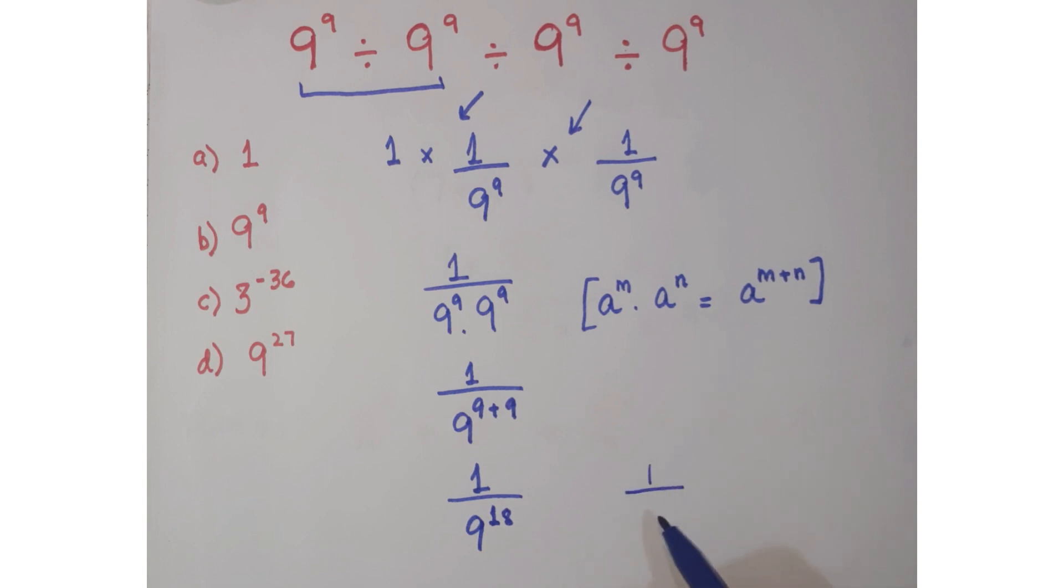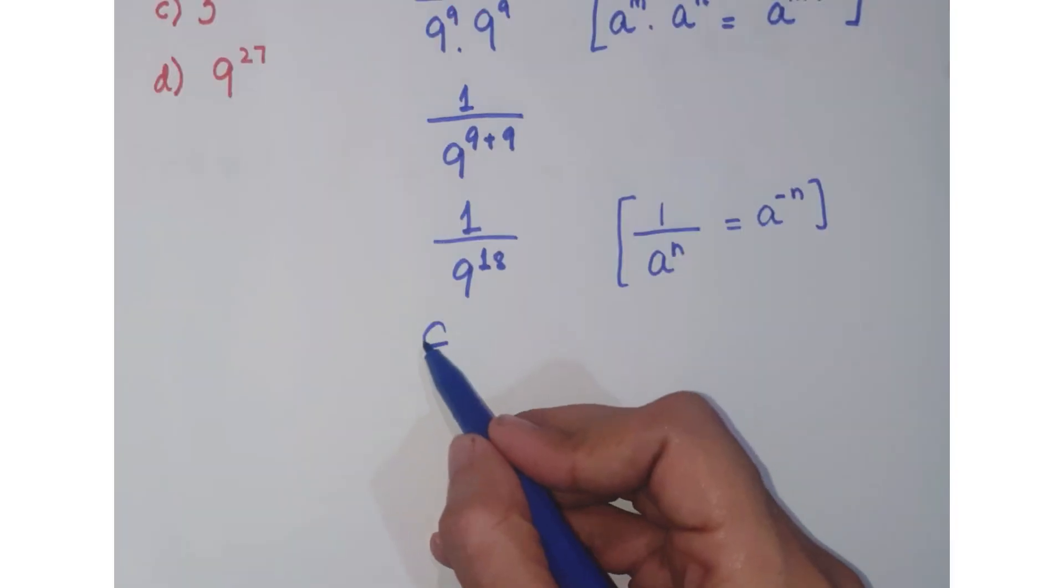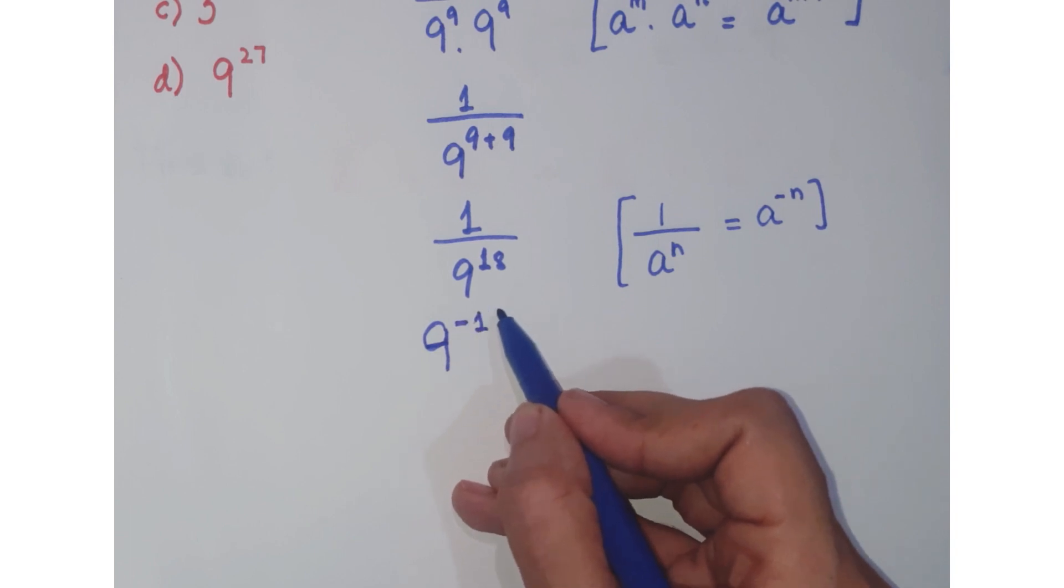As you know, any number written in this format, 1 over a to the power n, can be written as a to the power minus n. So 9 to the power minus 18.